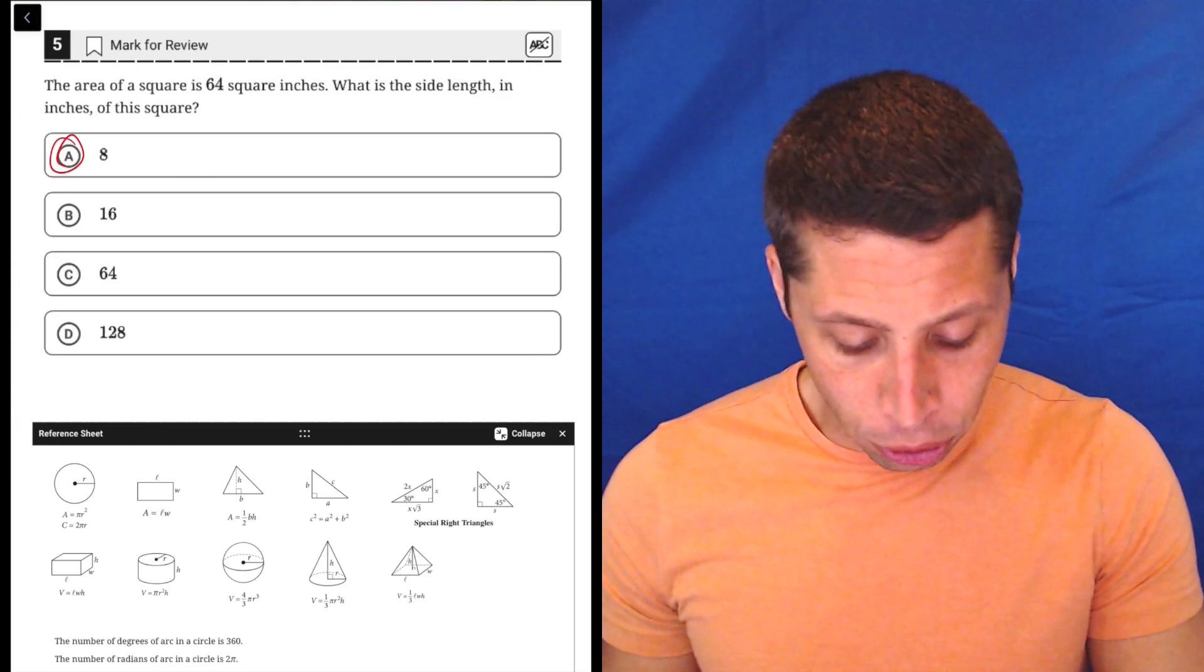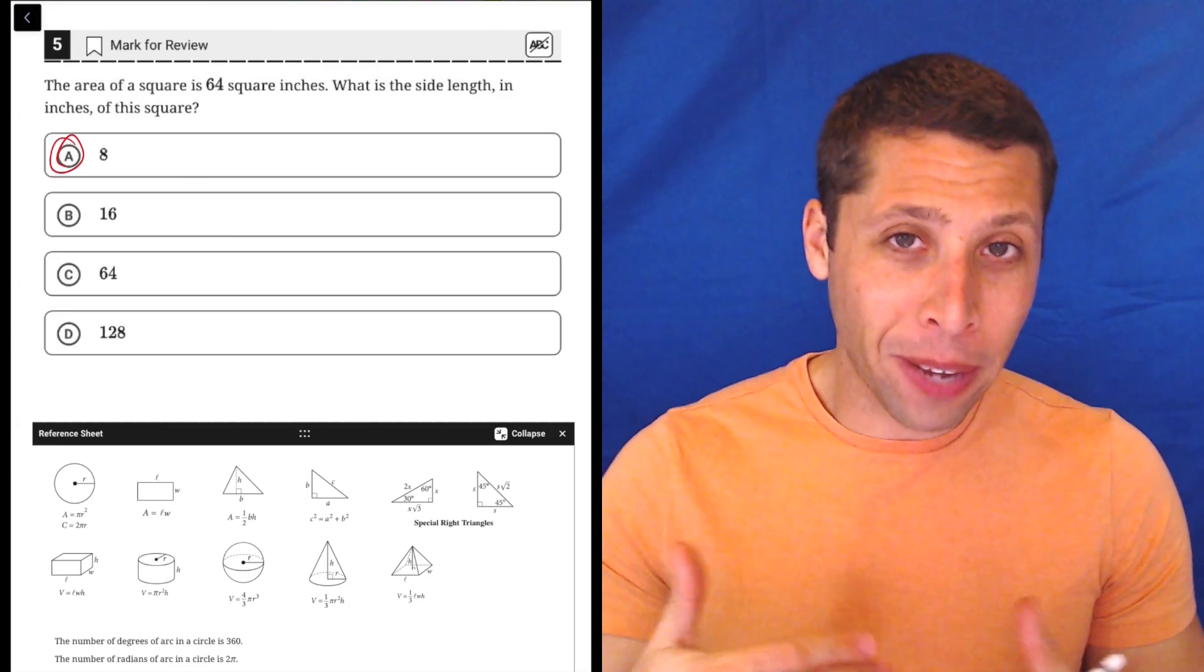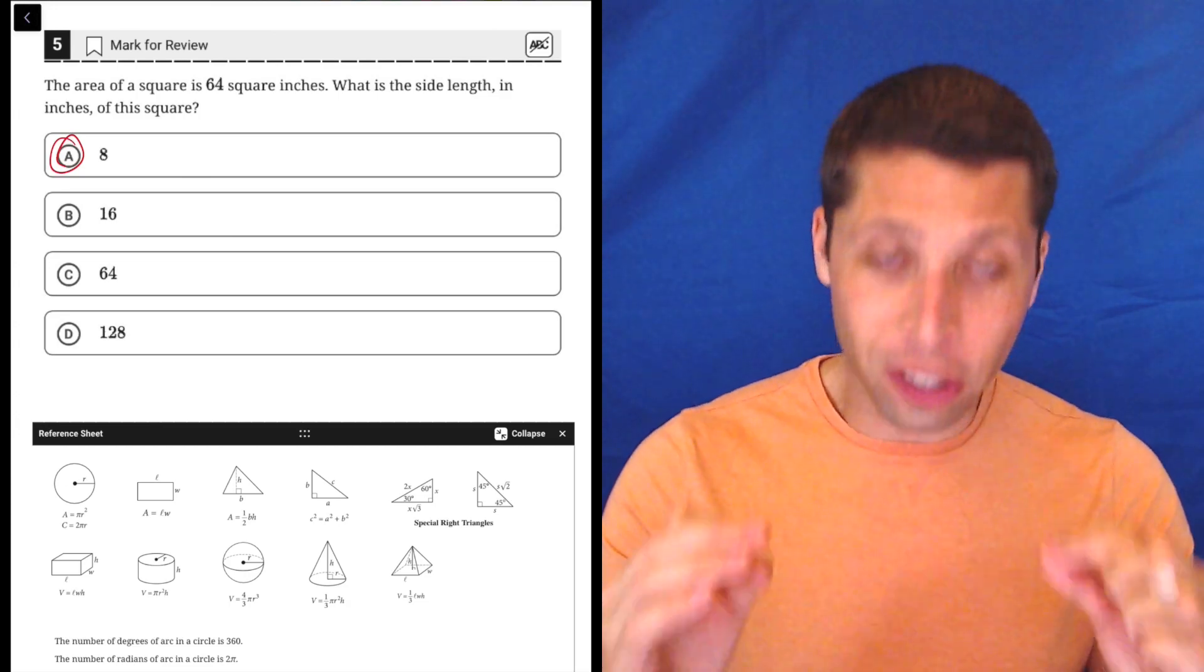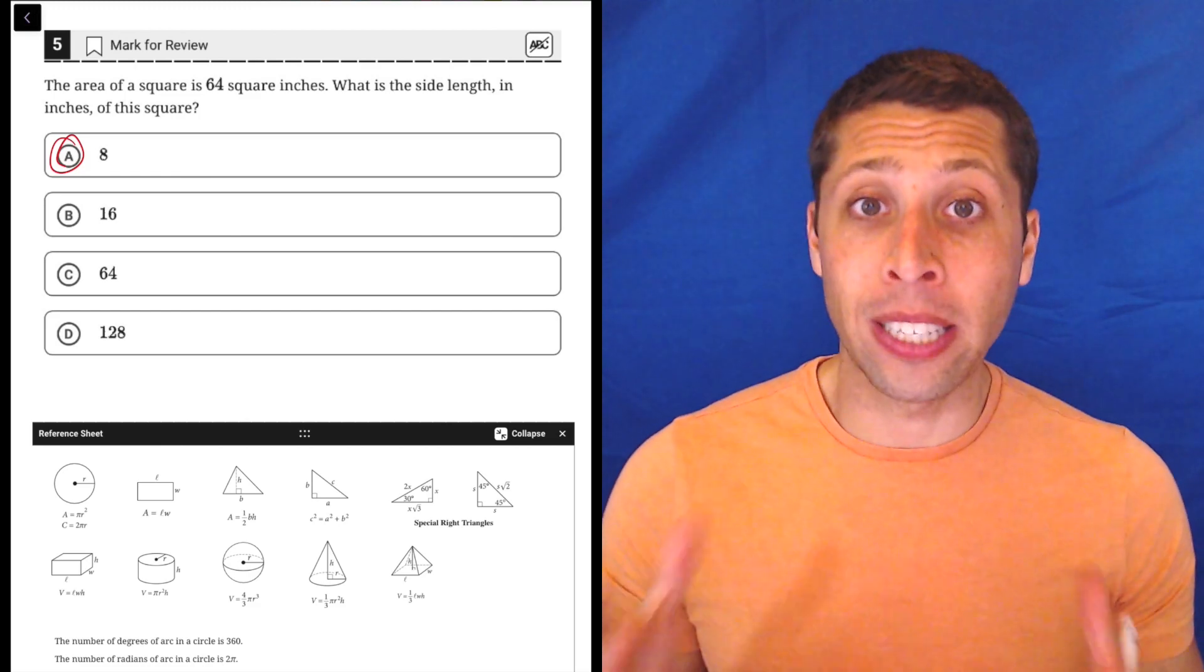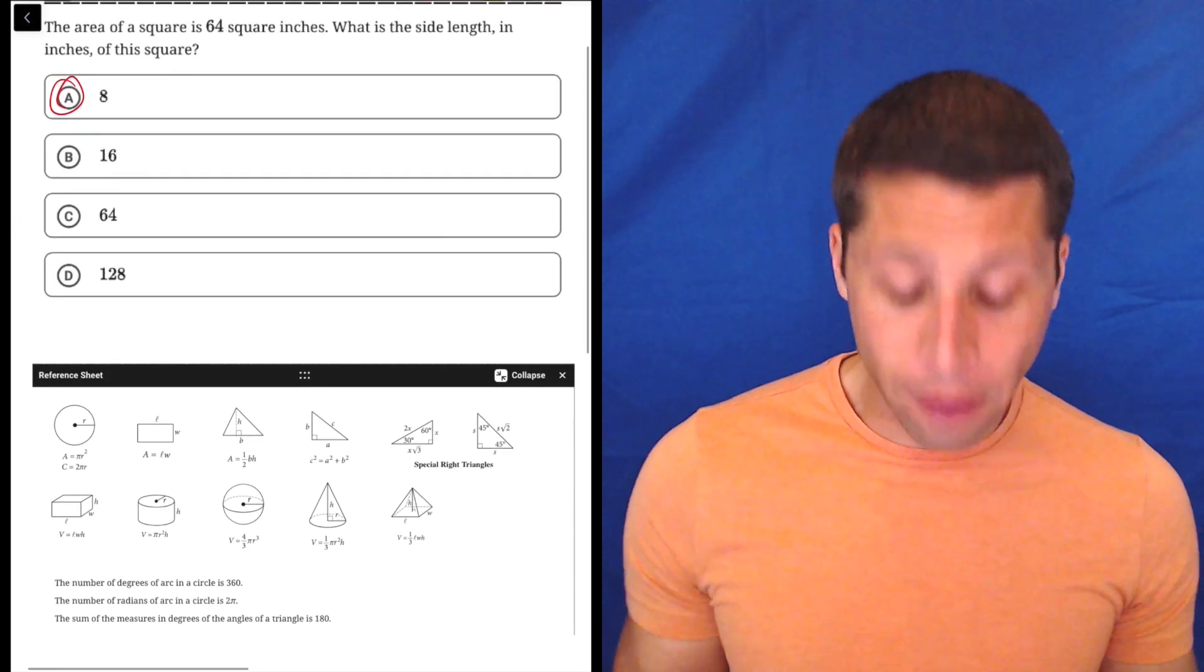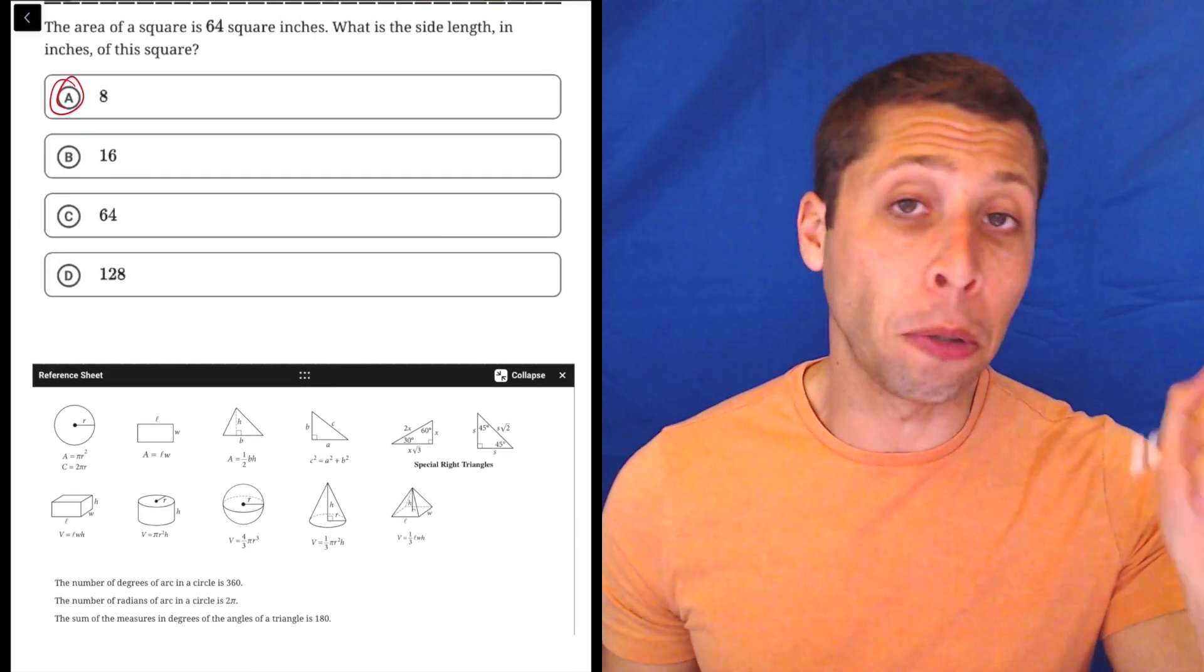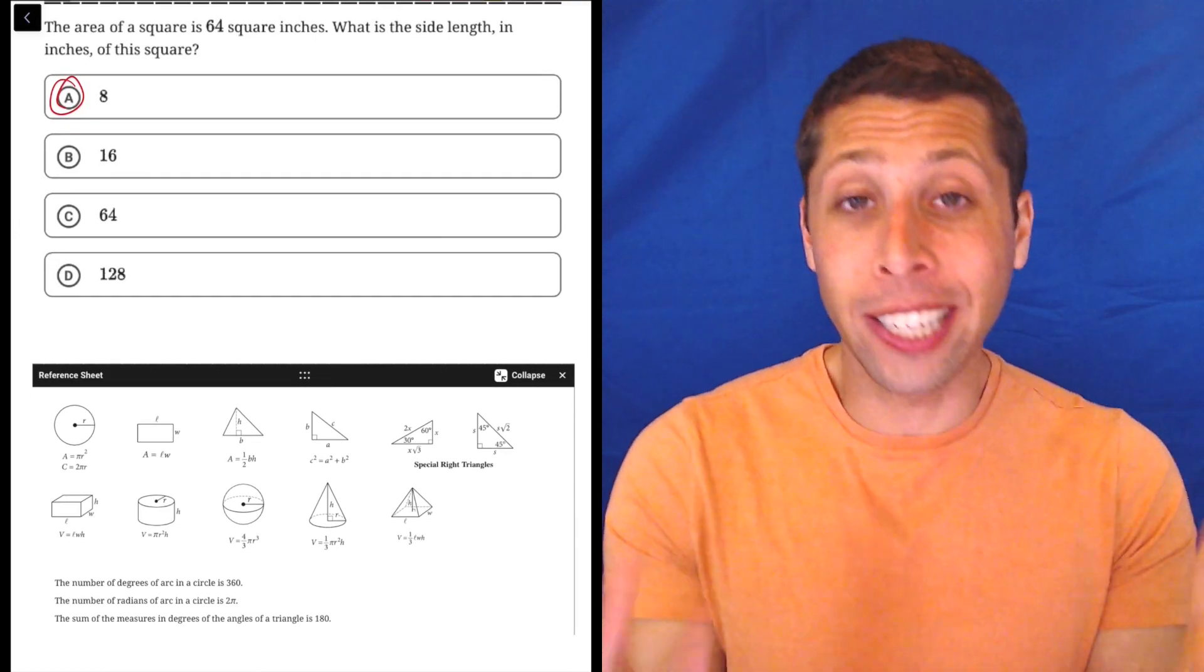If we want, we can draw a square, but the reason I'm kind of prolonging this explanation is just to teach you something you might not know yet. Every SAT math question gives you access to this geometry reference chart. It's in the top right corner of the Blue Book app—basically just click it and you get all these geometry formulas.